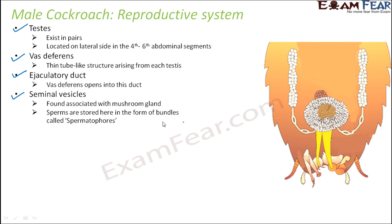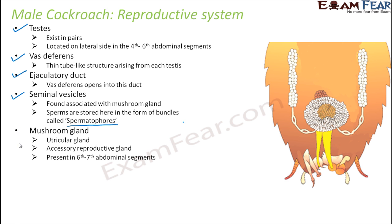Seminal vesicles are found associated with the mushroom gland, and sperms are stored here in the form of bundles called spermatophores. The testes produce sperms, which are carried by the vas deferens into the ejaculatory duct. Before that, there is an area of temporary storage called seminal vesicles, present in association with the mushroom gland. The sperms are stored as packets or bundles called spermatophores, released as needed. The mushroom gland, also called the utricular gland, is an accessory reproductive gland present in the sixth to seventh abdominal segment.